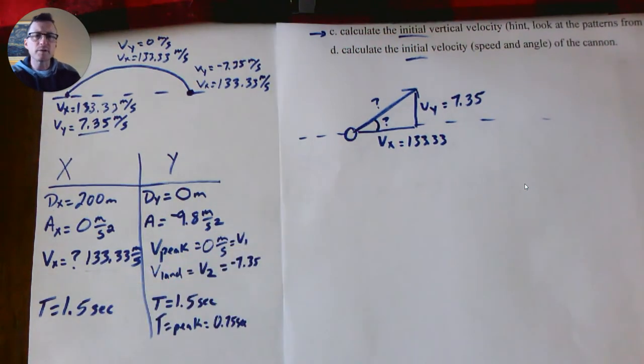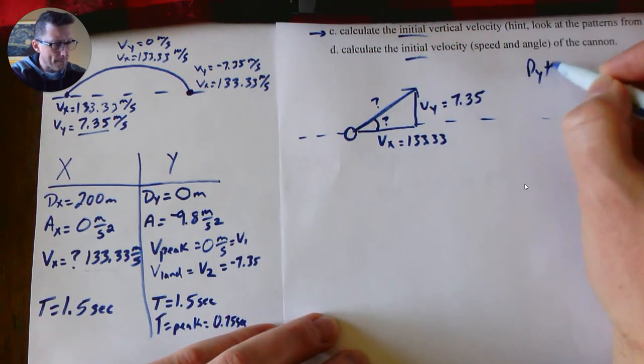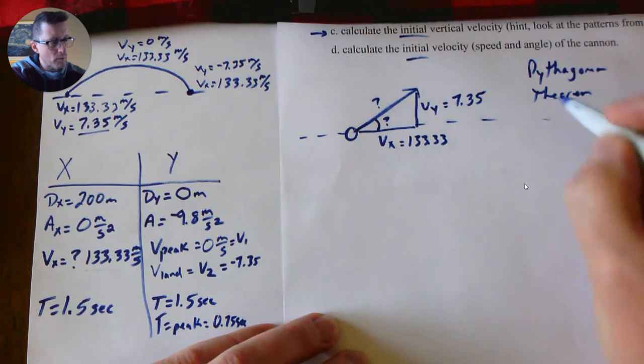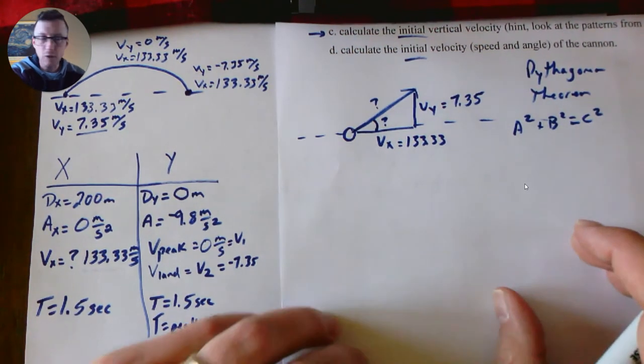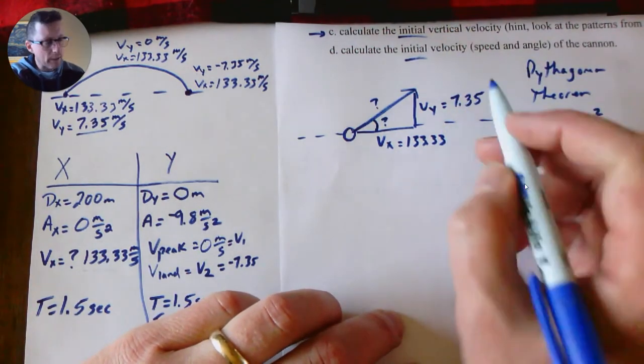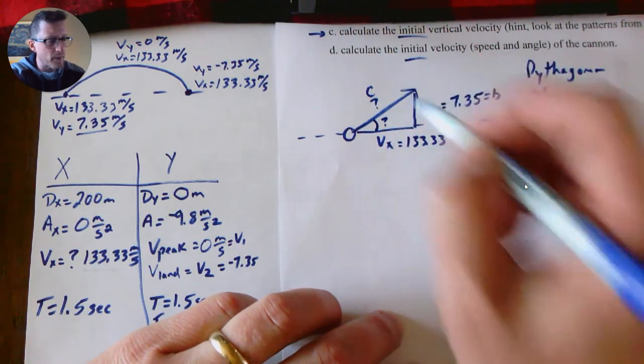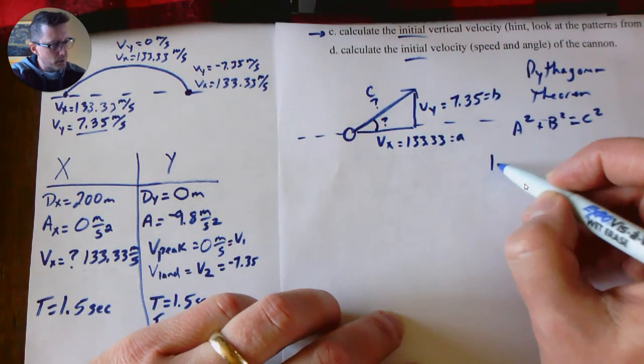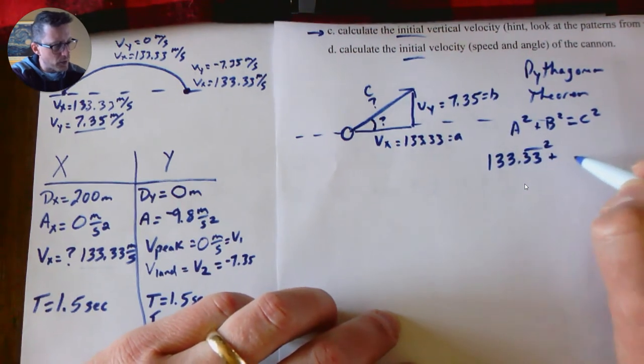So we're going to do a little bit of SOHCAHTOA in reverse on this one. So on this one we need Pythagorean theorem, where we have to remember—this is on your equation sheet—a squared plus b squared equals c squared. It doesn't matter which side we pick as an a. I'm going to pick that as a, is going to be b, and c is always your hypotenuse. So you say, okay, 133.33 repeating squared plus 7.35 squared must equal c squared.